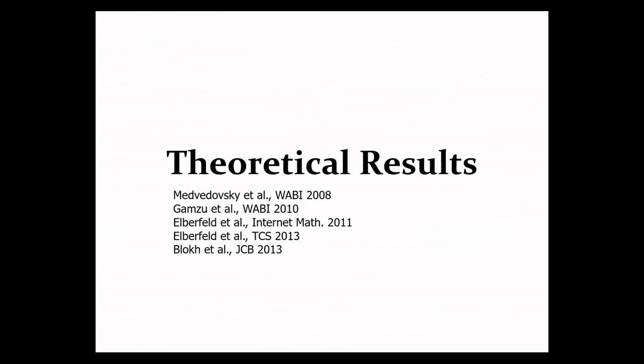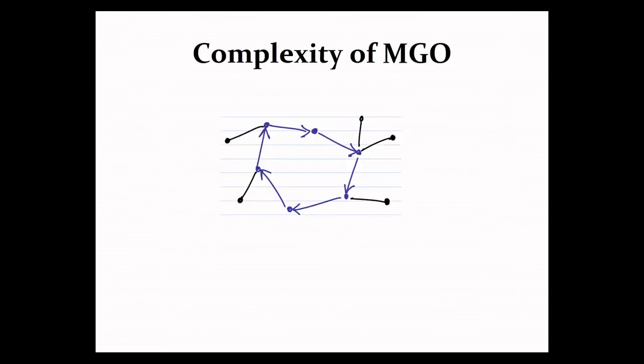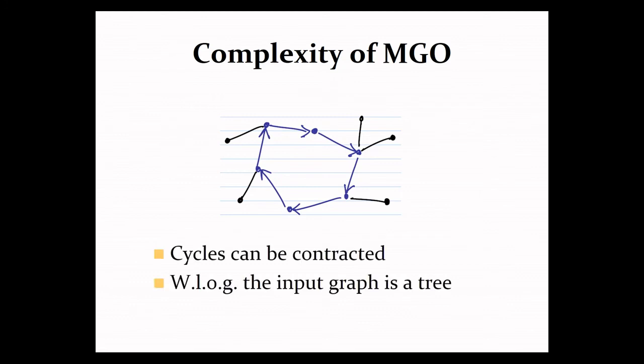So what I'd like to share with you next is some of our theoretical observations on this problem, which will become important when we try to come up with algorithmics for it. So first of all, an important observation about the problem that helps us to simplify it, which is that if we have a cycle in the network, we can always orient it in a consistent manner, be it clockwise or counterclockwise, and make every vertex on the cycle reachable from every other vertex. So this means that we can effectively contract the cycle, which means that we can assume that our graph or network is a tree.